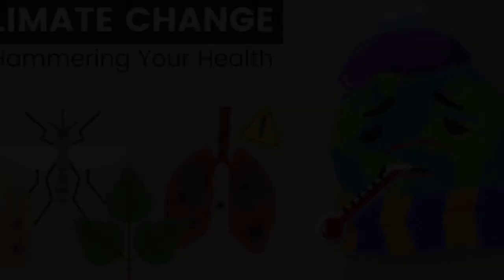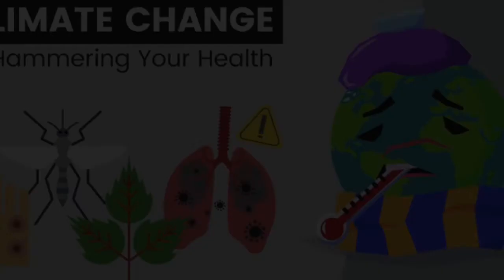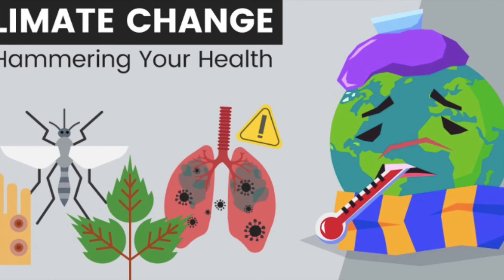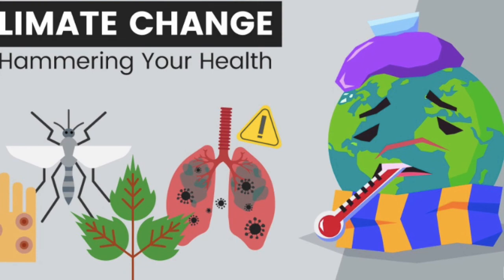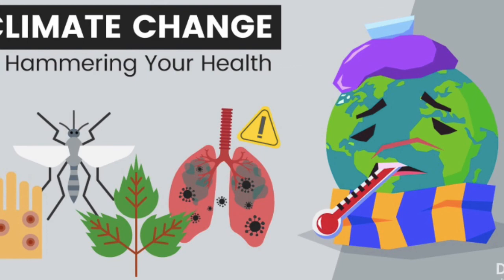According to the World Health Organization, climate change affects the social and environmental determinants of health like clean air, safe drinking water, sufficient food, and secure shelter. And between 2030 and 2050, climate change is expected to cause approximately 250,000 additional deaths per year from malnutrition and disease.